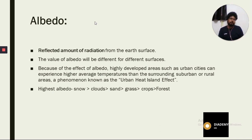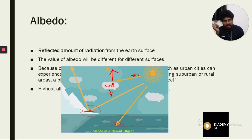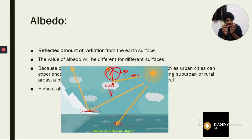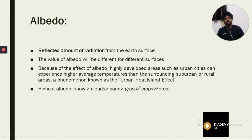Next is albedo — the reflected amount of radiation from the Earth's surface. When solar radiation comes in, some rays are absorbed, some are reflected, and some are refracted. The reflected amount of radiation is called albedo — essentially, how much a surface reflects. The value of albedo is different for different surfaces; albedo for ice is different from albedo for water.